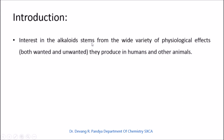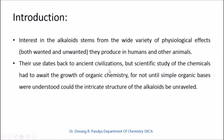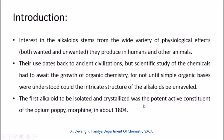Interest in alkaloids stems from the wide variety of physiological effects, both wanted and unwanted, they produce in humans and animals. Their use dates back to ancient civilizations, though scientific study had to await the growth of organic chemistry. The first alkaloid to be isolated and crystallized was morphine, the potent active constituent of the opium poppy, in about 1804. Morphine is used as a powerful analgesic drug for cancer patients.